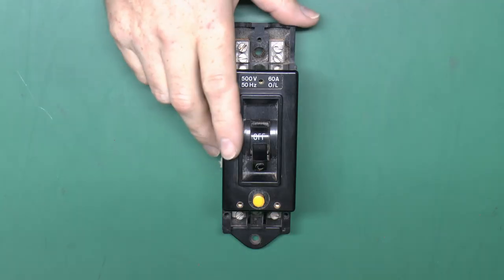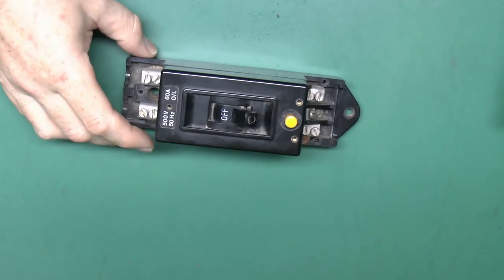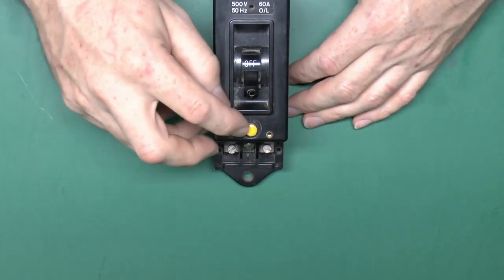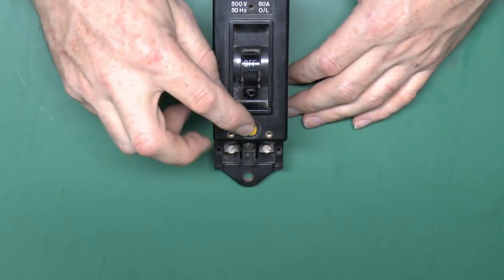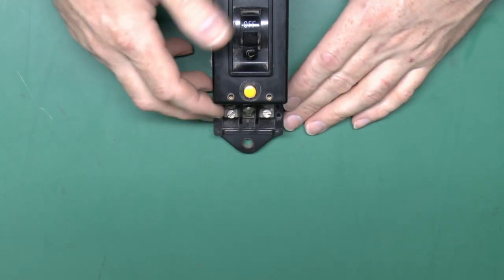Now this will be very similar to the Chiltern example and also quite similar to that GEC one, although this is a double pole device. I've got the yellow test button there. Some of these actually had red test buttons, but other than that they're pretty much the same inside.